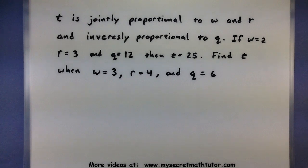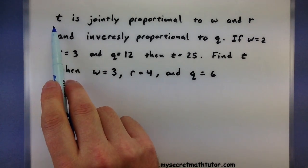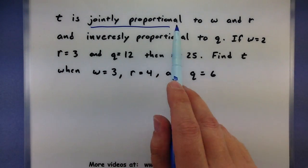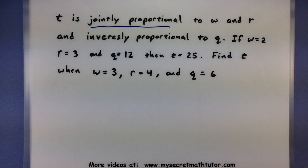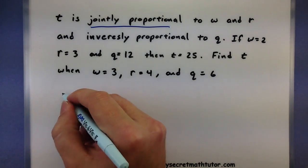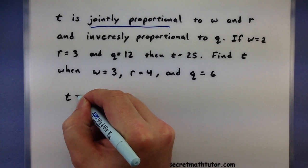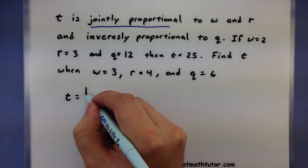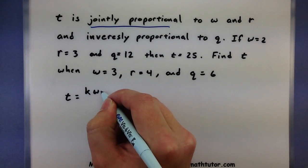So a ton of information in this one. Let's see if we can carefully start putting it together. The first thing I see is that t is jointly proportional to w and r. So I'm going to put that into my formula. So t is jointly proportional, so k, w, and r.